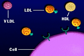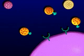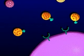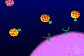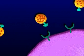Although very low-density lipoproteins have several apolipoproteins on their surfaces, the process that transforms them to LDL leaves only ApoB100 on the surface of LDL.